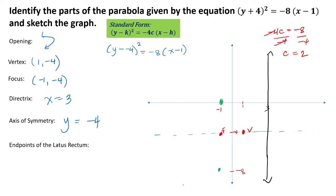So, for the endpoints of the latus rectum, that would be negative 1, 0, and negative 1, negative 8. And to give you a rough sketch of our parabola, this would be the graph.